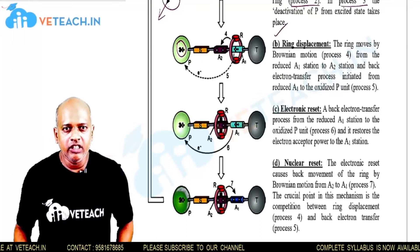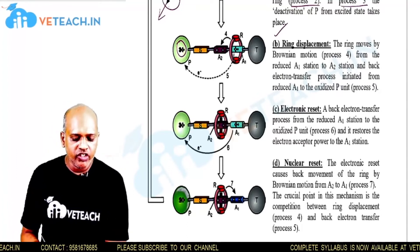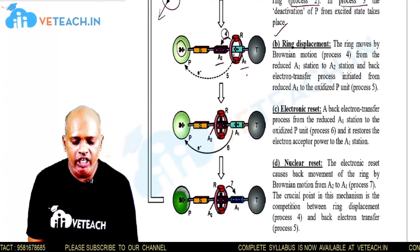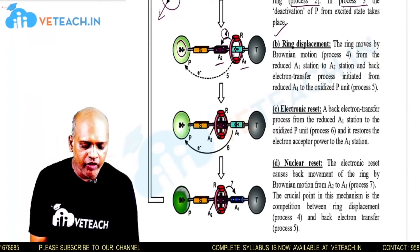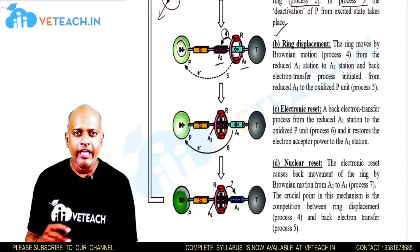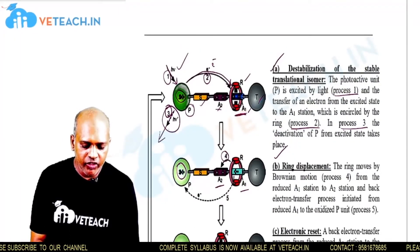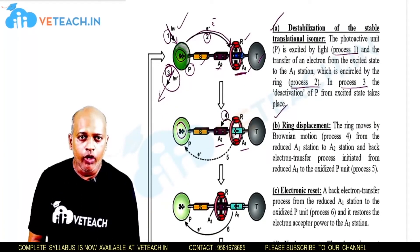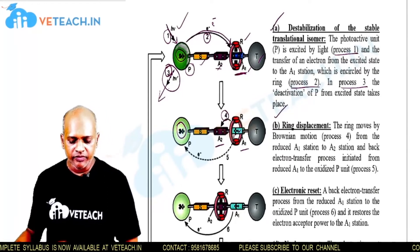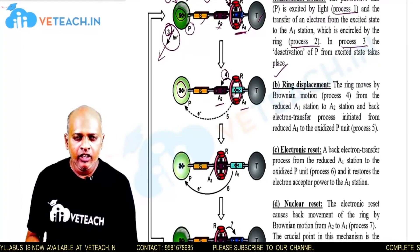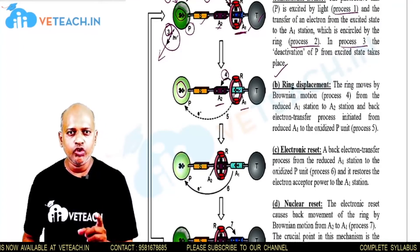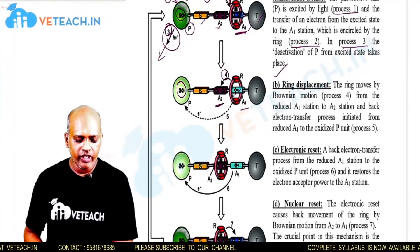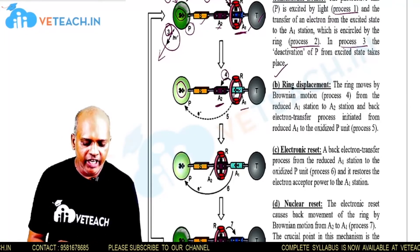The next operation is ring displacement. The ring, which is initially present at station A1, shuttles from A1 to A2. After gaining the electron from P, station A1 — which had two positive charges — now has only one positive charge. Due to this reduction, the ring shuttles to station A2. This is indicated by process 4.